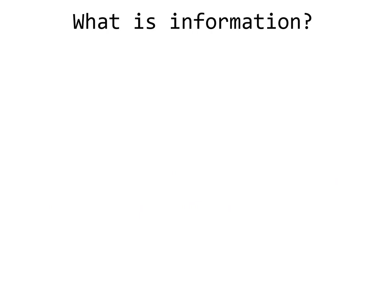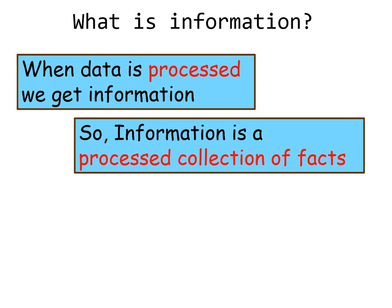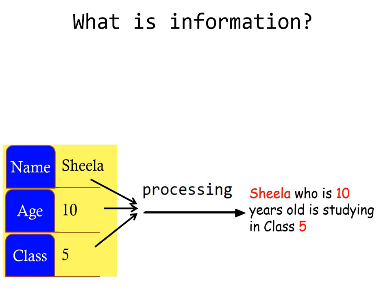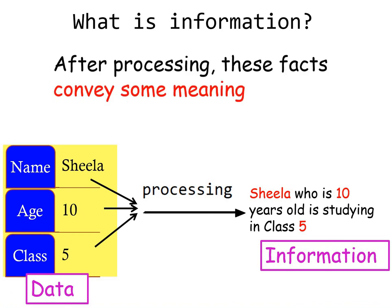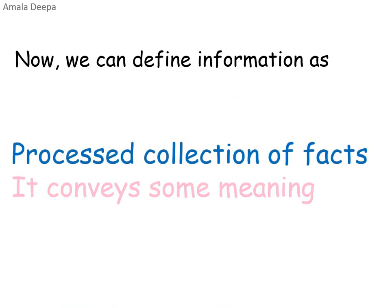What is information? When data is processed, we get information. So information is a processed collection of facts. The unprocessed data — Sheila, 10, 5 — after being processed gives information: Sheila, who is 10 years old, is studying in class 5. So data when processed gives information. After processing, these facts convey some meaning. We can define information as a processed collection of facts that conveys some meaning.